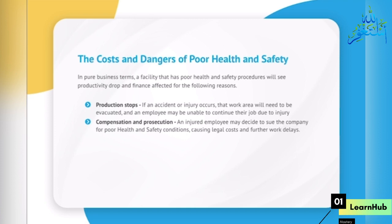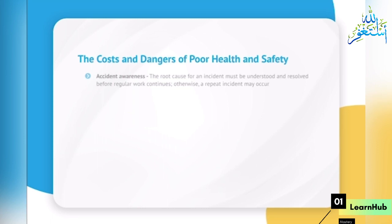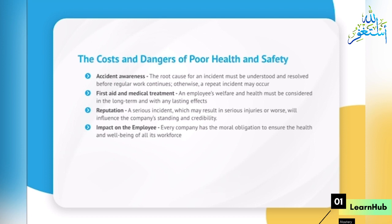Production stops: if an accident or injury occurs, that work area will need to be evacuated, and an employee may be unable to continue their job due to injury. Compensation and prosecution: an injured employee may decide to sue the company for poor health and safety conditions, causing legal costs and further work delays. Accident awareness: the root cause for an incident must be understood and resolved before regular work continues, otherwise a repeat incident may occur.